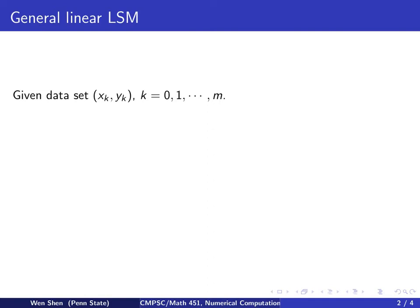So given the data set (x_k, y_k), k = 0, 1, ..., m. Let g_0, g_1, g_2, ... g_n be n+1 given functions, linearly independent.